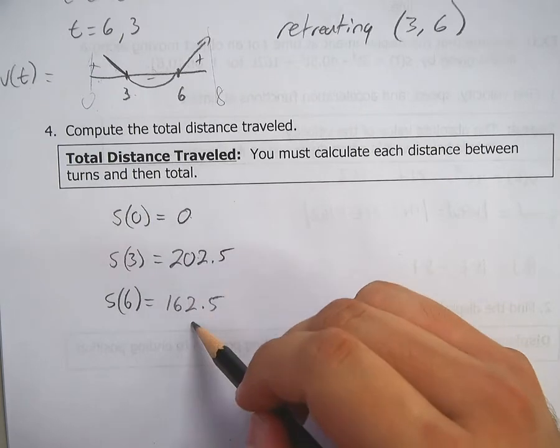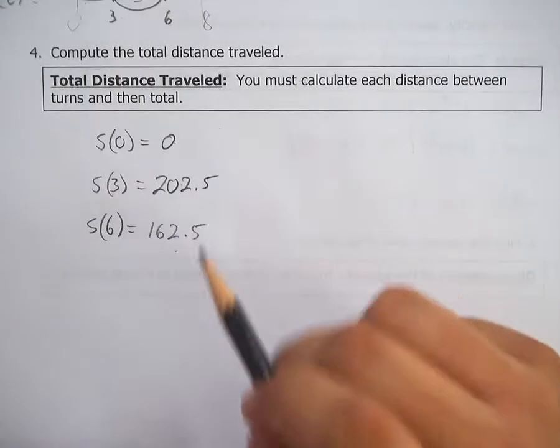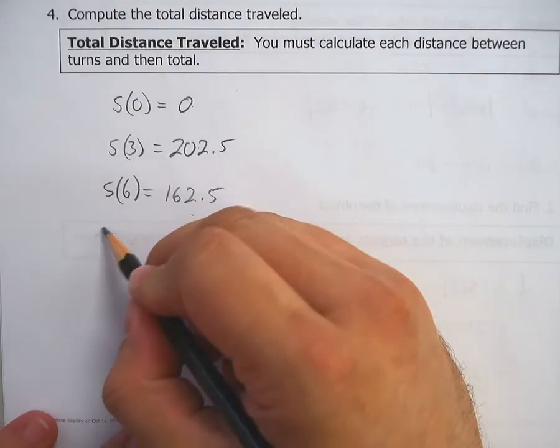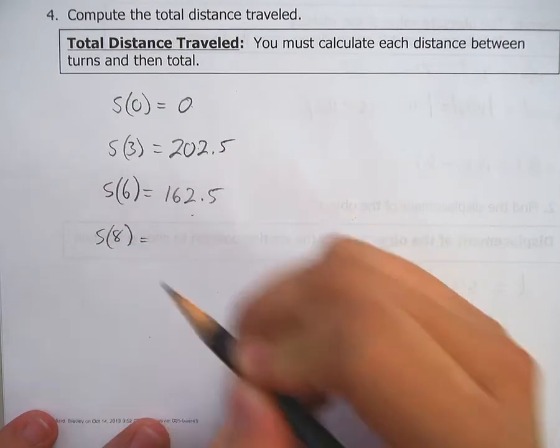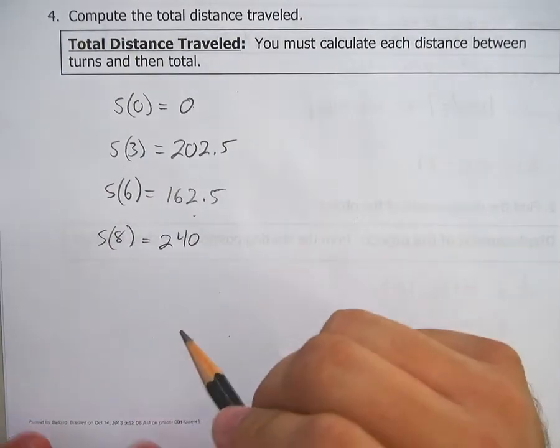Remember, these are positions, right? And then S of 8. Where did you stop? Well, that's 240. We found that out on the front as well.